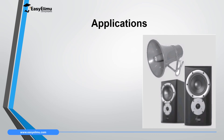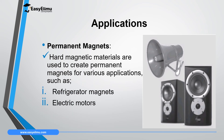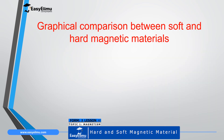Hard magnetic materials are used to make permanent magnets for various applications, including refrigerator magnets, electric motor magnets, and loudspeaker magnets. The magnets found in loudspeakers are permanent magnets made from hard magnetic materials, which is why they retain magnetism for a very long time.